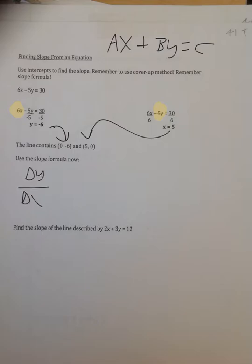Change in y over change in x. My y's, I have negative 6 minus 0, and then 0 minus 5. We end up with negative 6 over negative 5, which is 6 fifths.